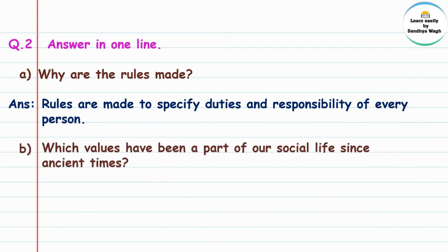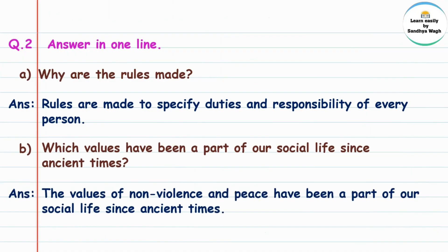Which values have been a part of our social life since ancient time? 'Ancient' manje prachin — prachin kadapasun konti mulyhe aple samajik jivnache bhag ahe? Answer: The values of non-violence and peace have been a part of our social life since ancient times. 'Non-violence' manje ahimsa ani 'peace' manje shantata.